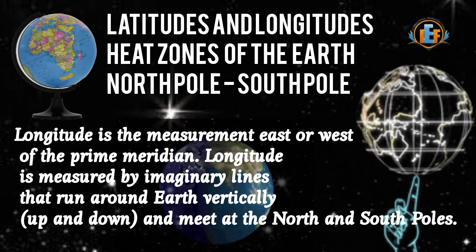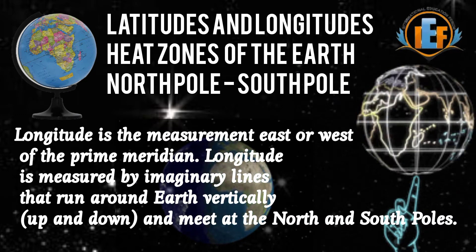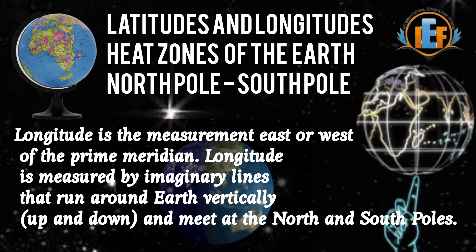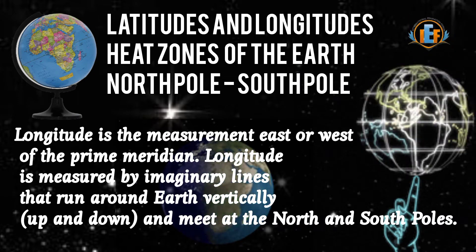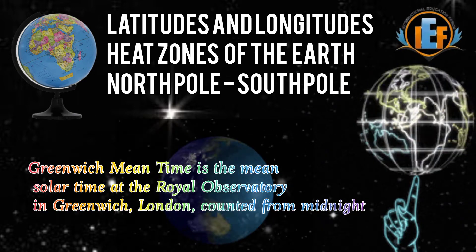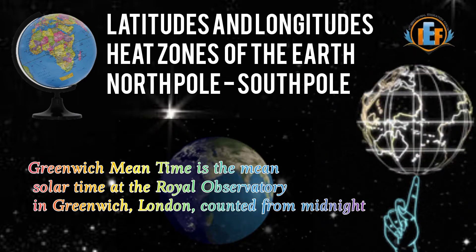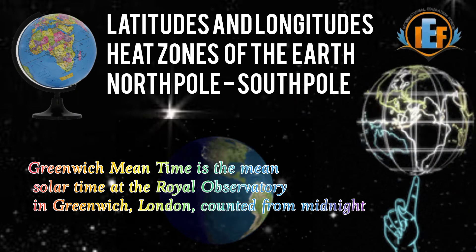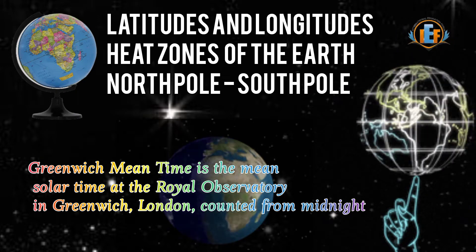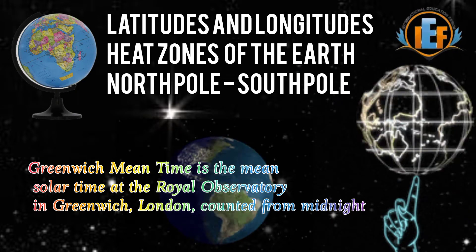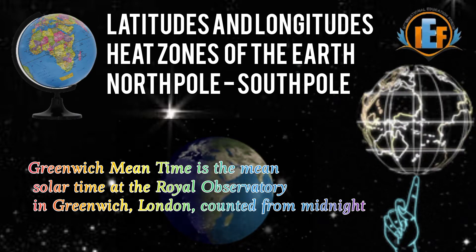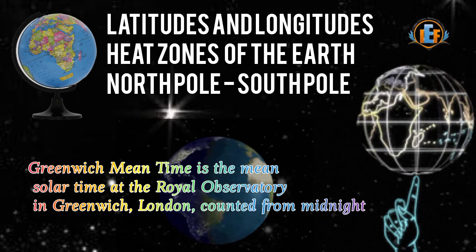The longitudes running north to south are also called the meridians. There are 180 in its east and 180 in its west, so totally there are 360. The zero meridian is called GMT — Greenwich Mean Time. It is located near London. GMT is also known as the international dateline.